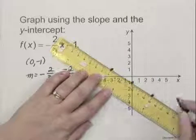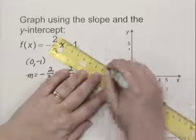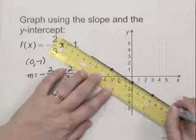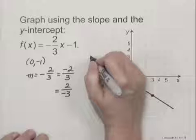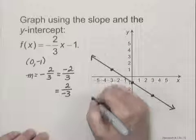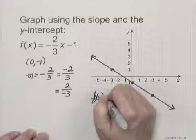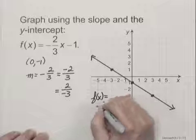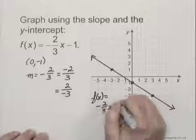So we can draw a line through them, which is the graph of the function, and label it f(x) equals negative two-thirds x minus 1.